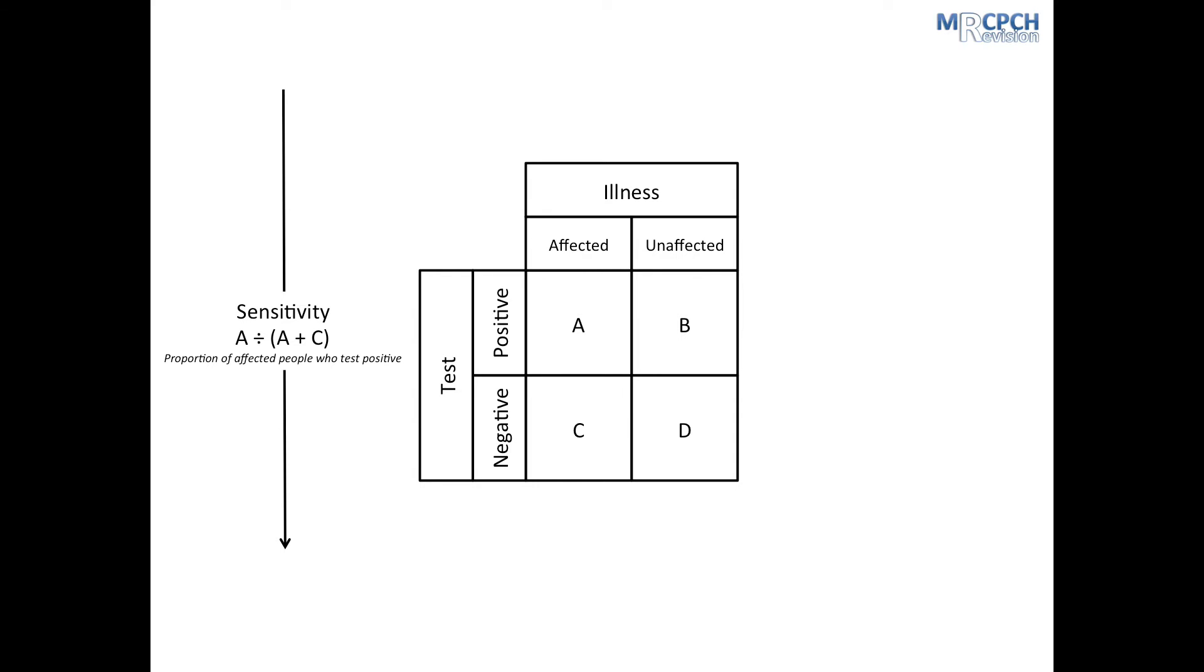Next, there is specificity. Specificity is a proportion of people unaffected by disease that test negative for that disease. Box D represents those unaffected who test negative. Boxes B and D represent all the people unaffected by disease. So, specificity can be worked out by dividing D by B plus D. In other words, working bottom to top, up the right-hand column.